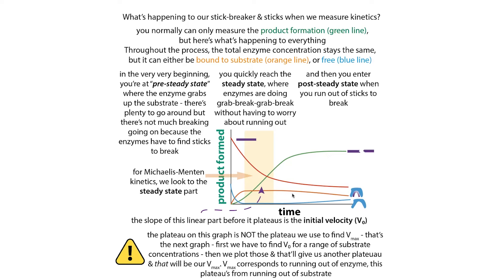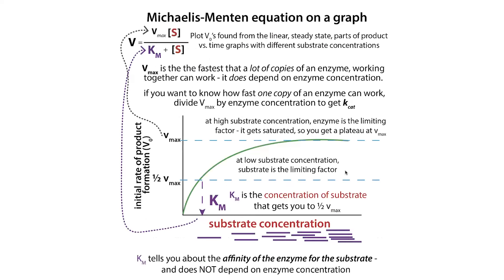The plateau at one concentration of substrate is not the plateau we're going to talk about when finding Vmax. When we're talking about Vmax, that's going to correspond to running out of enzyme as opposed to running out of substrate. Here we plot each of the V-zeros from your different reactions and figure out the Vmax.